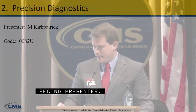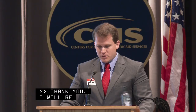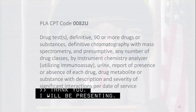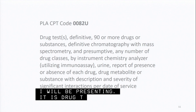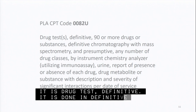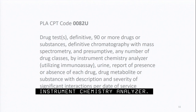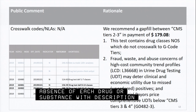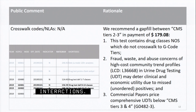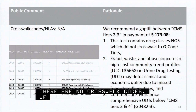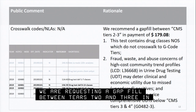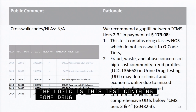I'll be presenting on 0082U — drug tests, definitive, 90 or more drug tests or substances, done in definitive chromatography with mass spectrometry and presumptive any number of drug classes by instrument chemistry analyzer utilizing immunoassay, in urine. It reports the presence or absence of each drug, drug metabolite, or substance with description and severity of significant interactions per date of service. There are no crosswalk codes. We're requesting a gap fill between CMS tiers 2 and 3 with a payment of $179.08.